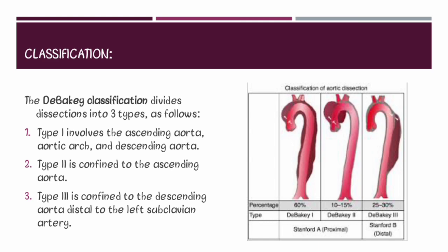The DeBakey classification divides the dissection into three types. Type 1 involves three parts of the aorta: the ascending aorta, arch of the aorta, and descending aorta, as seen in the figure. Type 2 is confined to the ascending aorta. Type 3 is confined to the descending aorta, which is distal to the left subclavian artery.